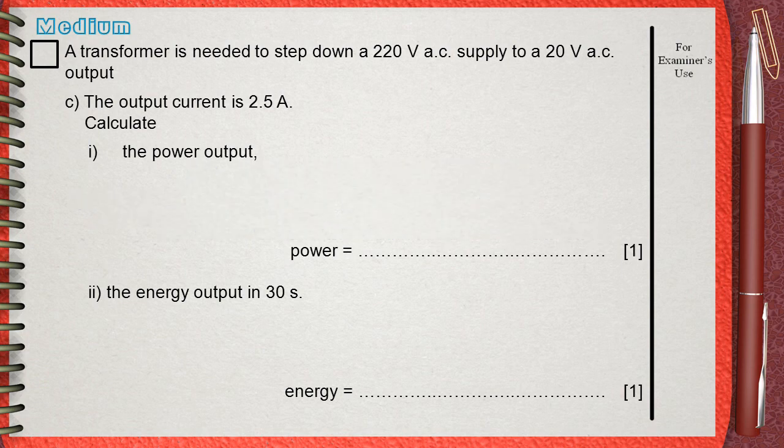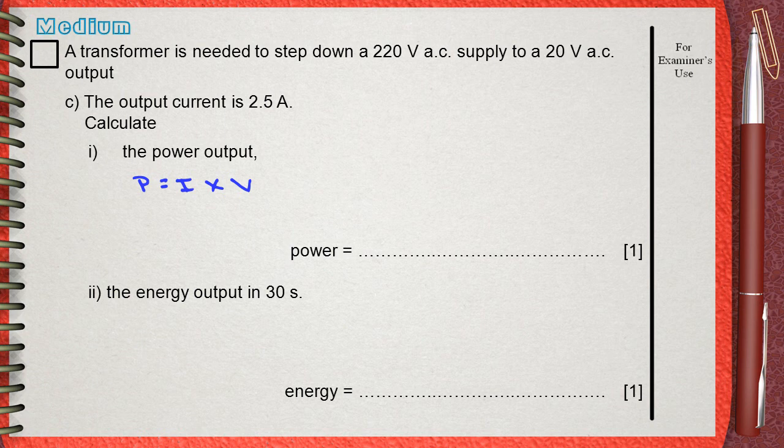It's a simple electricity calculation. Power equals current I times voltage V. Since the current on the output is 2.5 Amperes, and as you see the output voltage is 20 volts as mentioned in the question, this means that the output power will be 50 watts.